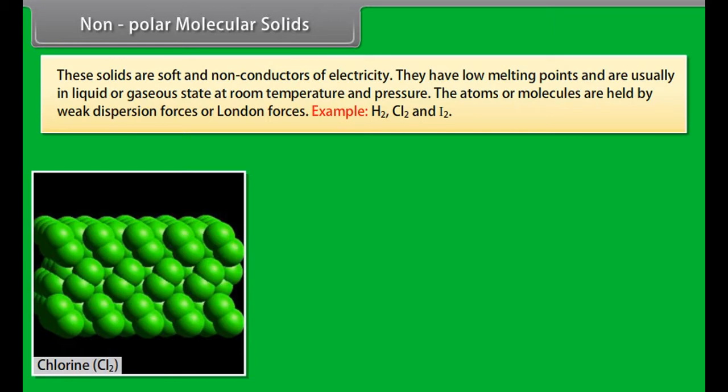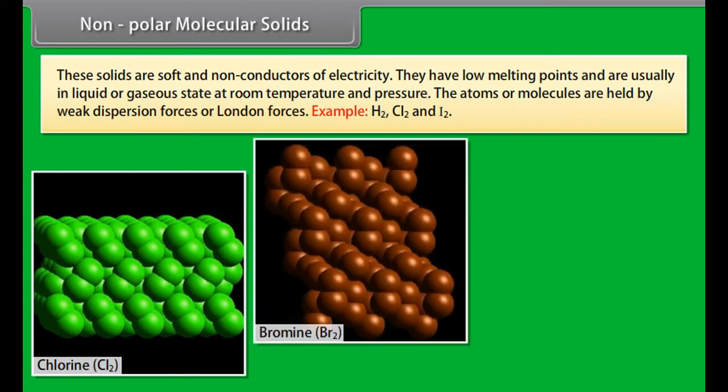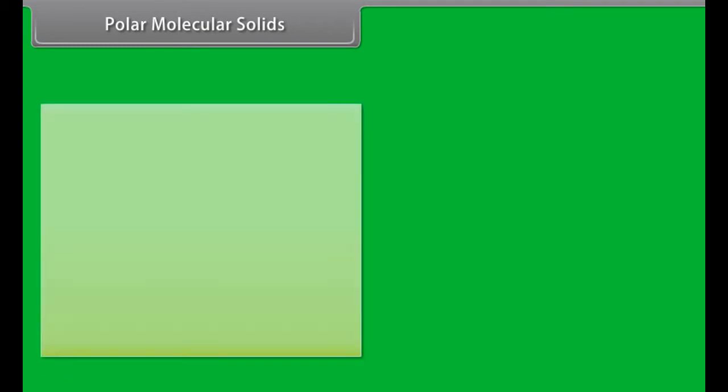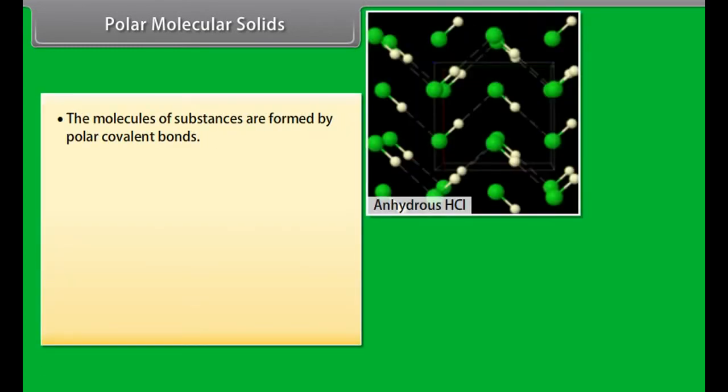Crystalline solids can be classified on the basis of nature of intermolecular forces operating in them into four categories: molecular, ionic, metallic, and covalent solids.